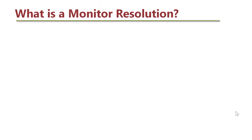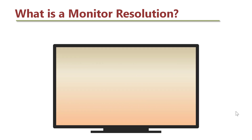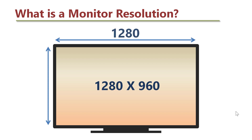What is a monitor resolution? A monitor resolution tells the number of pixels on the X and Y axis of a computer screen. If someone says that a screen resolution is 1280 by 960, it means there are 1280 pixels on the X axis and 960 pixels on the Y axis.